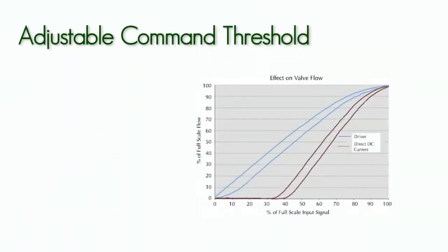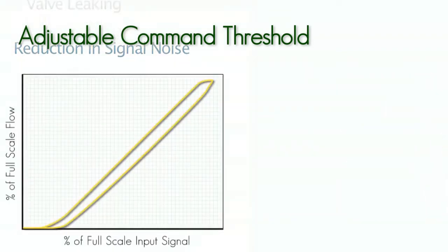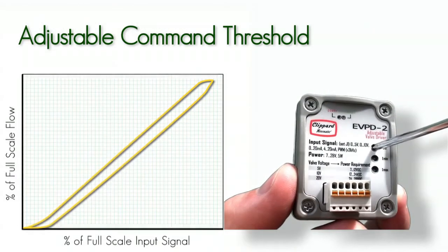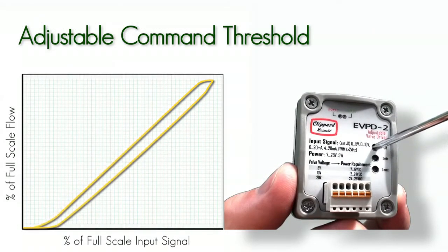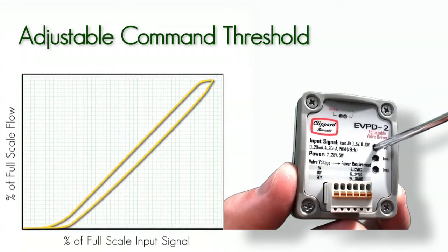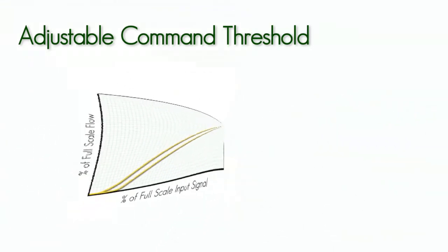Adjustable Command Threshold: Because of the valve's response deadband, it is possible to keep the valve closed by driving it with less current than the minimum necessary to open the valve. However, there are many reasons why it is best if there is no current going through a valve when it is intended to be closed. So the Clipper EVPD provides an adjustable command threshold. When the command signal is below this threshold, there will be no current through the coil. The threshold value is adjustable to accommodate for different command signals and other environmental factors such as electrical noise.